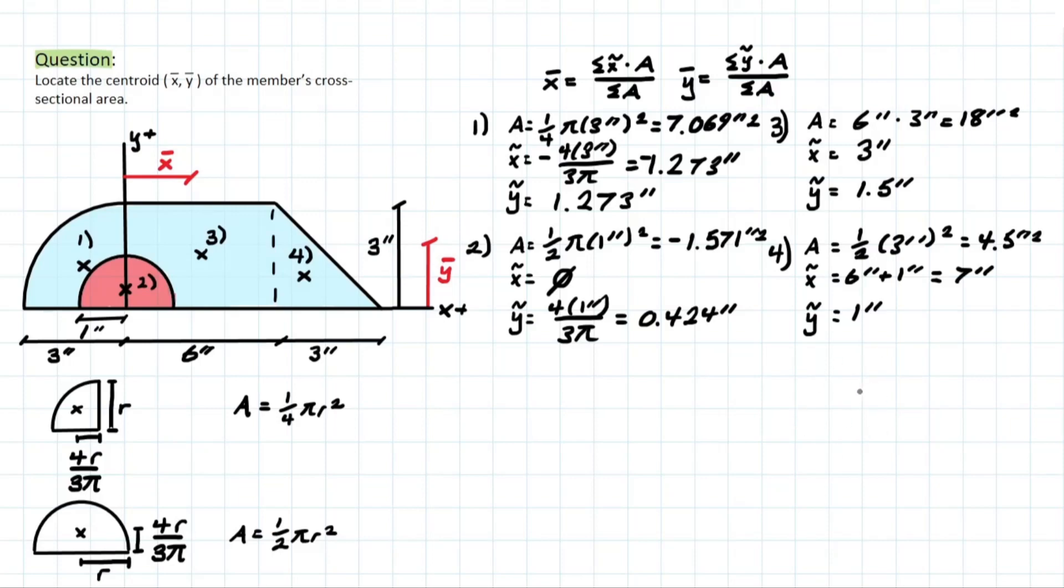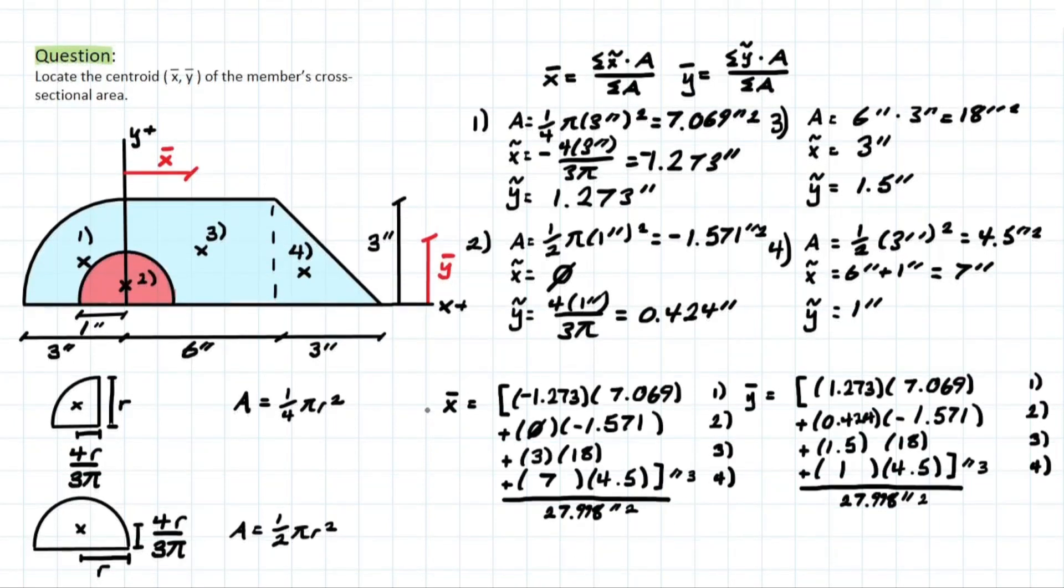So now we have everything that we need to plug into our formulas. So let's go ahead and start doing that. Okay, so I went ahead and plugged in our values for x bar and y bar formulas. We've done all the hard work already. The only thing that's different now is just explaining what is happening. So we're pretty much just following what the formula is asking for. So it wants x tilde times area for each of the separate shapes, and it wants it all summed together. So that's what we did.